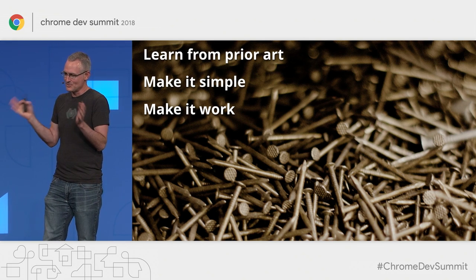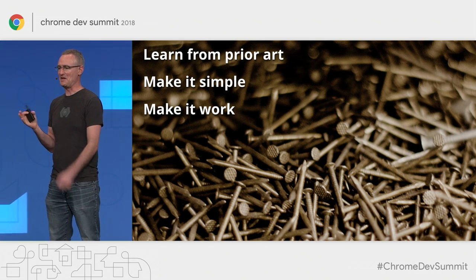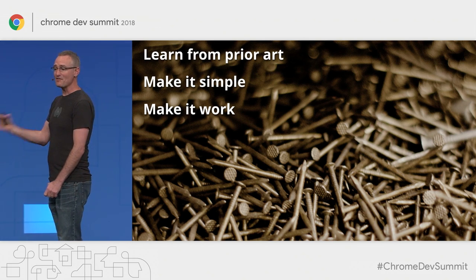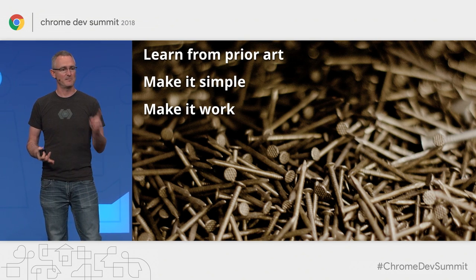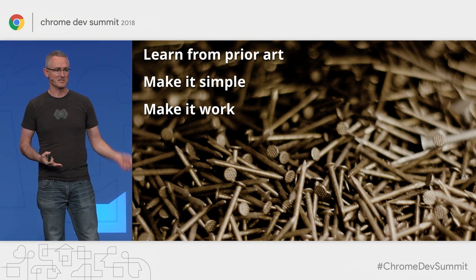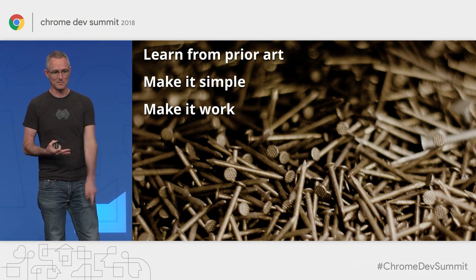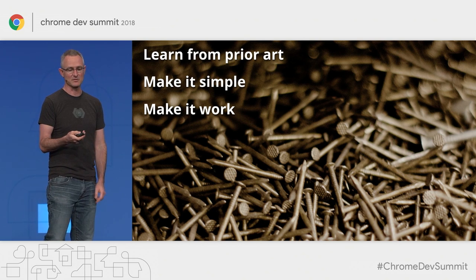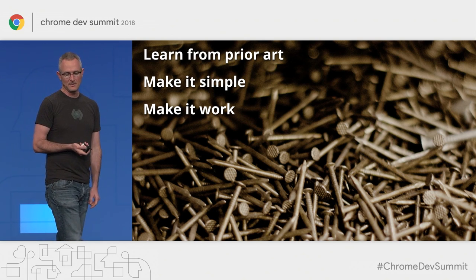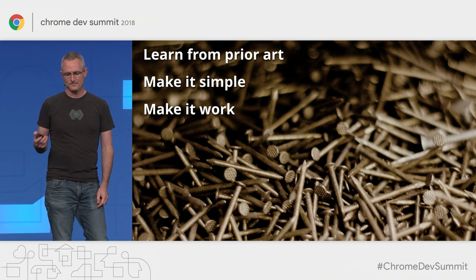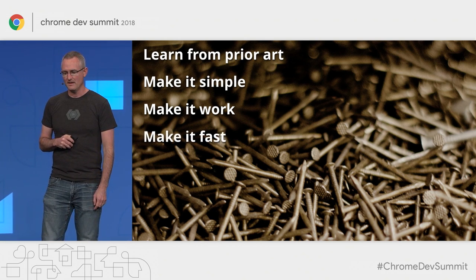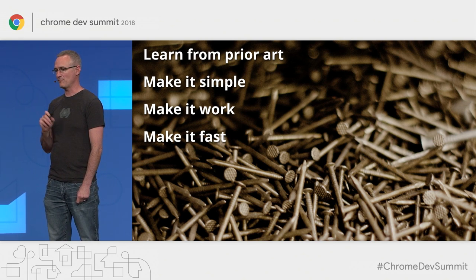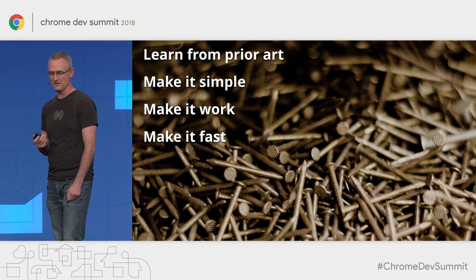When building something into the web platform itself, it's important to get the very basic use cases right — because web APIs live forever. So we wanted to learn from prior art, make it simple, and make everything work. We talked about links and find-in-page — it's critical that accessibility works, and we want tabbing from item to item to work. And of course it needs to be fast, since this is a performance problem we're trying to solve.